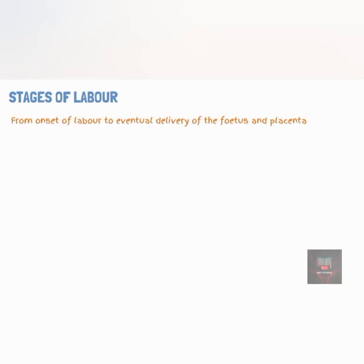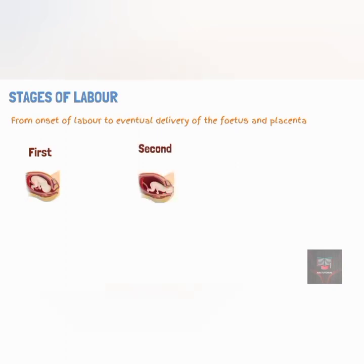Labor is generally said to be in three stages. The first stage occurs when the cervix becomes fully dilated to allow for the passage of uterine contents. The second stage involves the passage of the fetus through the birth canal and eventual delivery of the fetus. The third stage involves the delivery of the placenta.